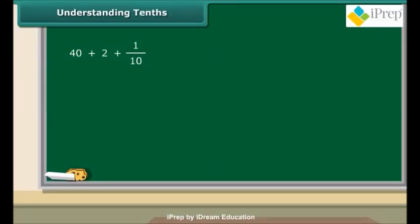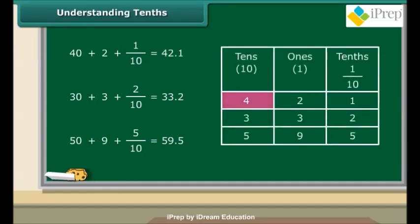Let us now learn to read and write decimals. Consider the example: 40 plus 2 plus 1/10. You know that 40 plus 2 is 42. Adding 1 tenth to it will make it 42.1. Consider another example: 30 plus 3 plus 2 tenths will be 33.2. 50 plus 9 plus 5 tenths will be 59.5. Let us read these numbers from the table. 4 tens and 2 ones and 1 tenth make 42.1. 3 tens and 3 ones and 2 tenths make 33.2. Similarly, 5 tens and 9 ones and 5 tenths make 59.5.